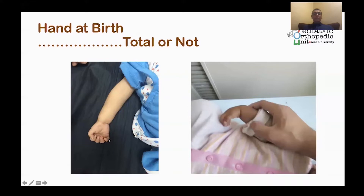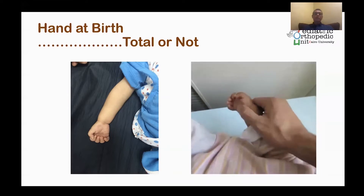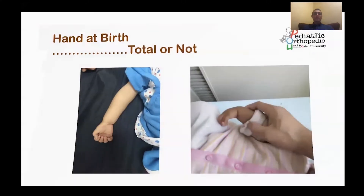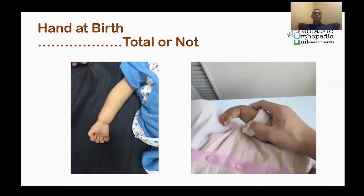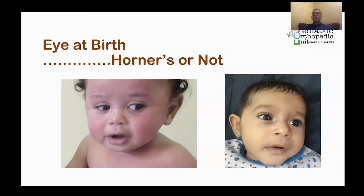Looking at the hand can immediately differentiate between total and partial injury. If there is no flexion of the fingers or there is an intrinsic minus posture, this is diagnosed as total brachial plexus palsy. But if there is a good hand, this is not total brachial plexus palsy. Once we diagnose total brachial palsy, we have to look at the eye for Horner syndrome, as it carries very poor prognosis and indicates avulsion of C8-T1 roots.